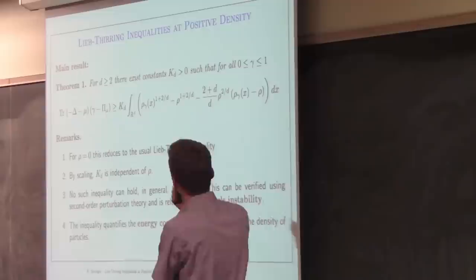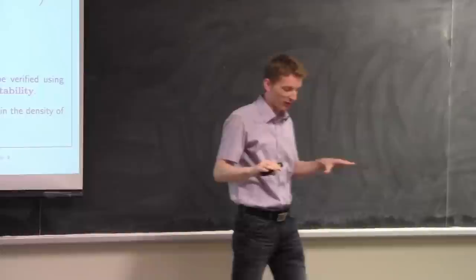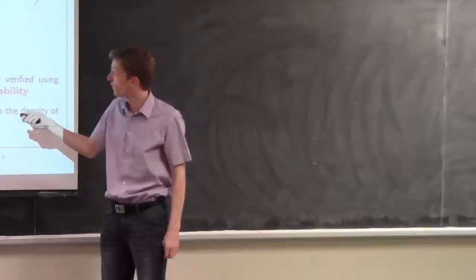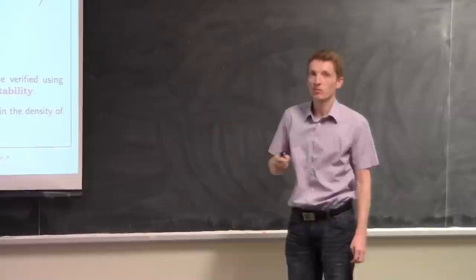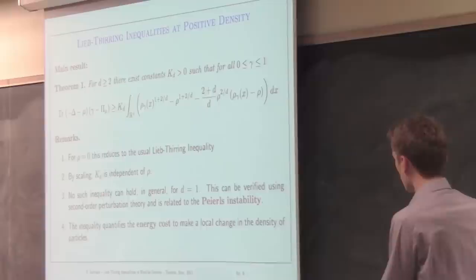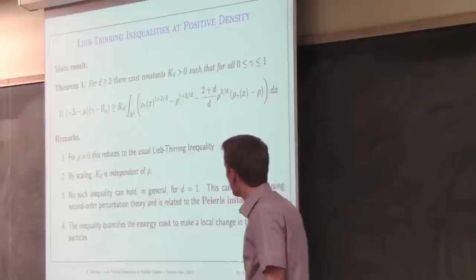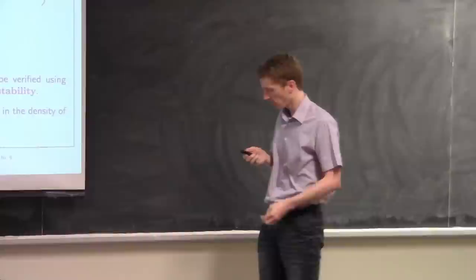Interestingly, such an inequality only holds in dimensions d ≥ 2. The usual Lieb-Thirring inequality does hold in one dimension, but this positive-density version fails there. This failure is connected to a physical effect known as the Peierls instability. The inequality holds in dimension ≥ 2, and this can be seen via second-order perturbation theory.